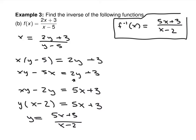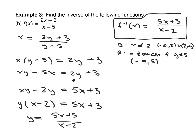That trick where you get all the things on the same side that have what you want to solve for will come up again in section 3.5. For the domain of f inverse, x cannot equal 2, so it's negative infinity to 2 union 2 to infinity. Ranges are harder to get from the equation itself. But since this is an inverse of f, the range of f inverse equals the domain of f, and the domain of f has x cannot equal 5.